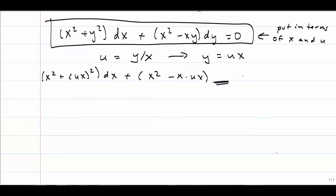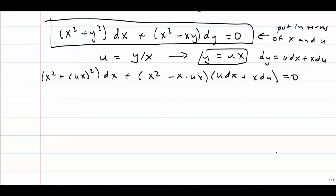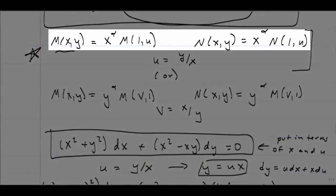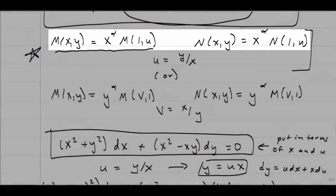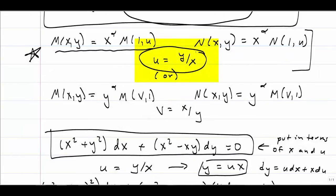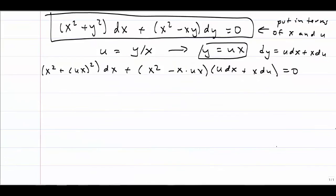I've run into a problem: I have a dy and I don't want any dy's just like I don't want any y's. If y equals ux, then by the product rule, dy is simply u dx plus x du, and I'm going to use that for my dy. I've gone ahead and done my substitution — all I needed to do was remember what my substitution for u was. So now we're dealing with just a lot of algebra.